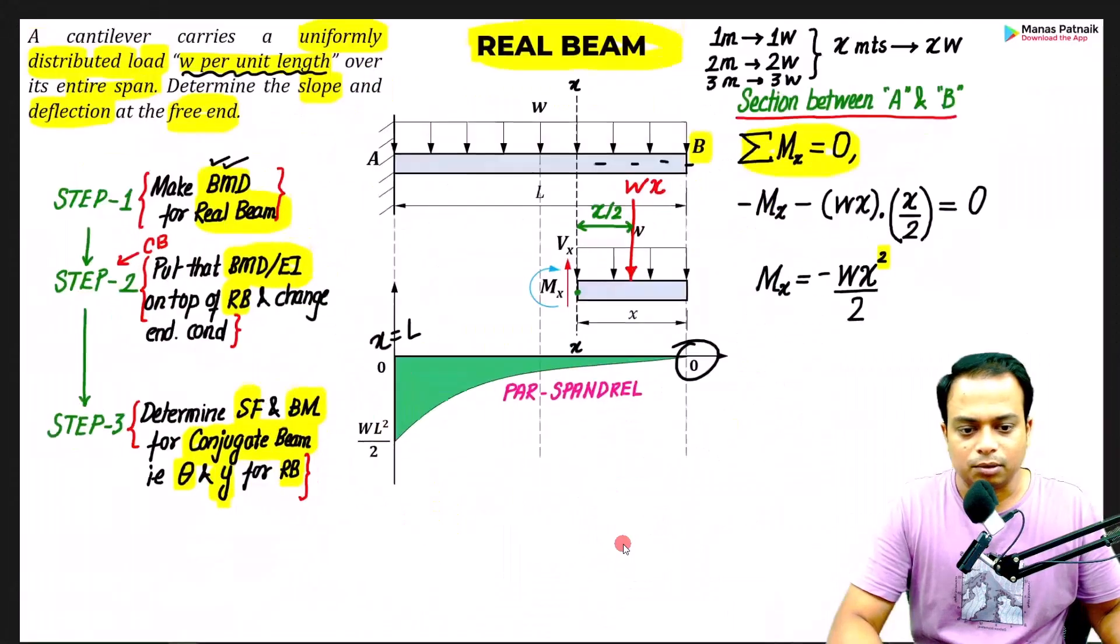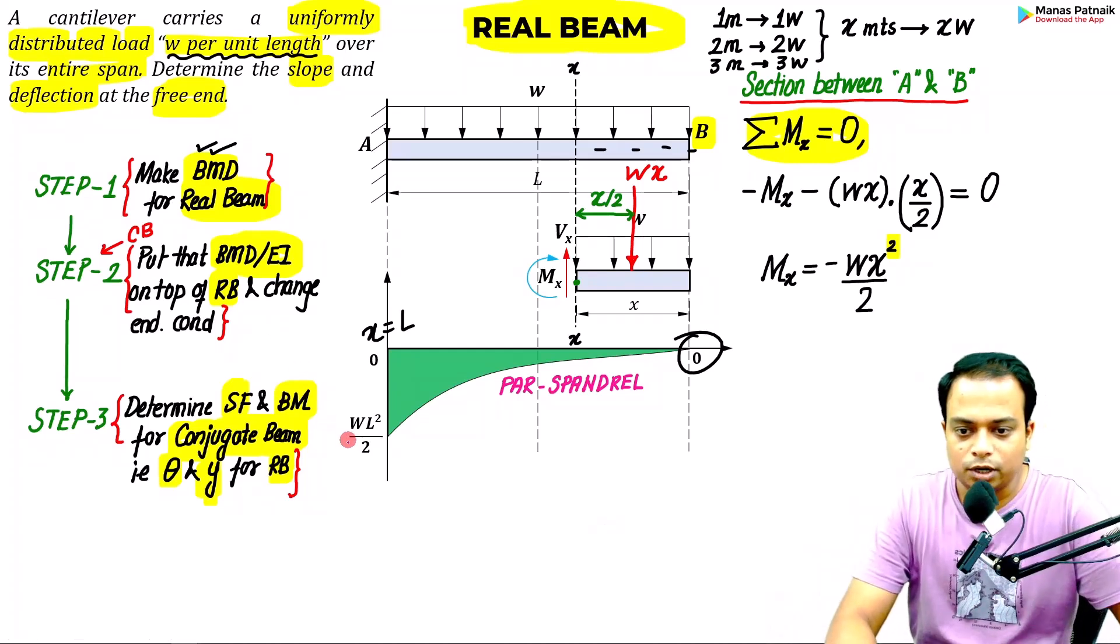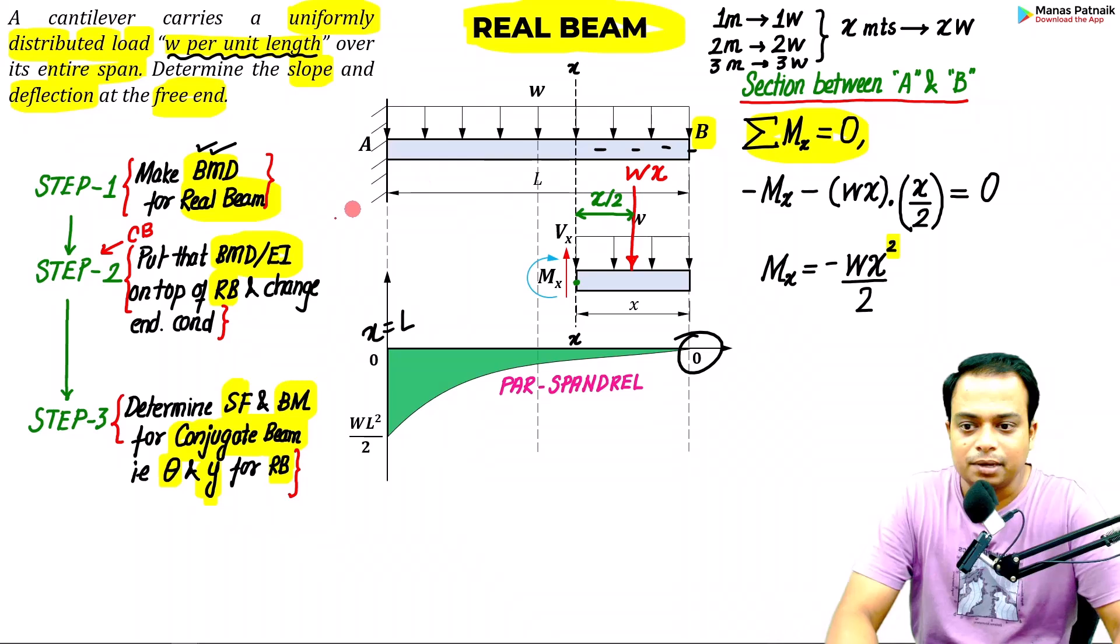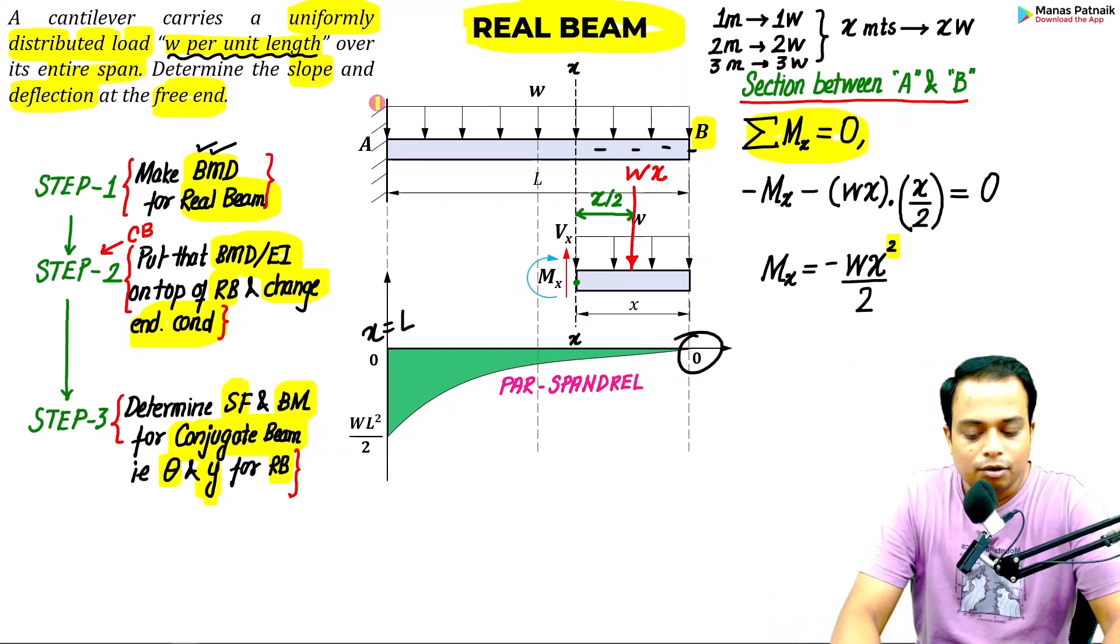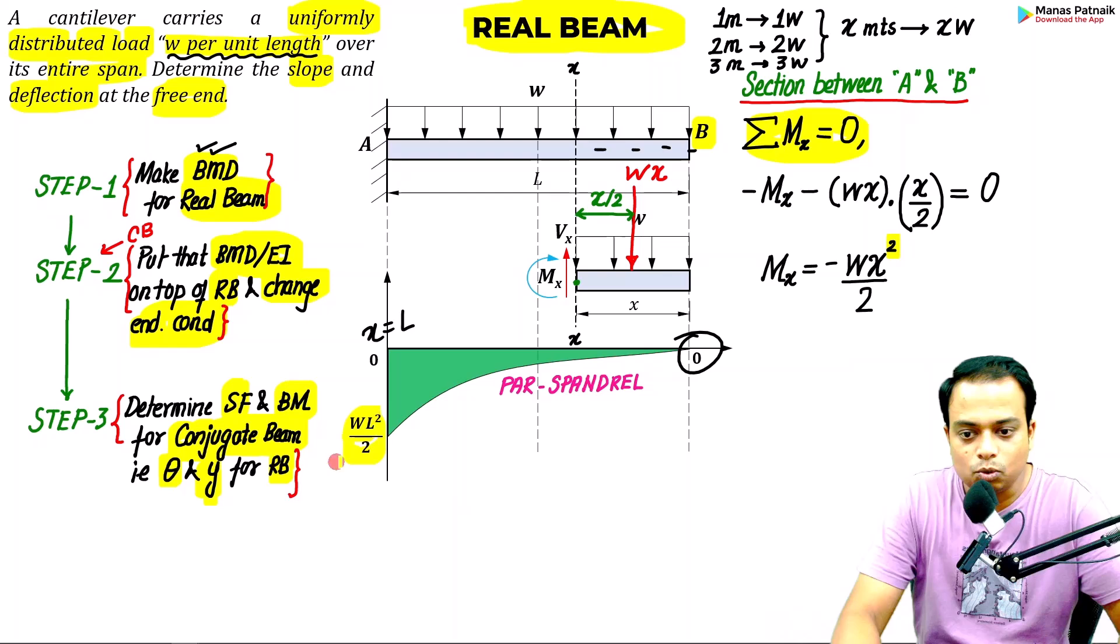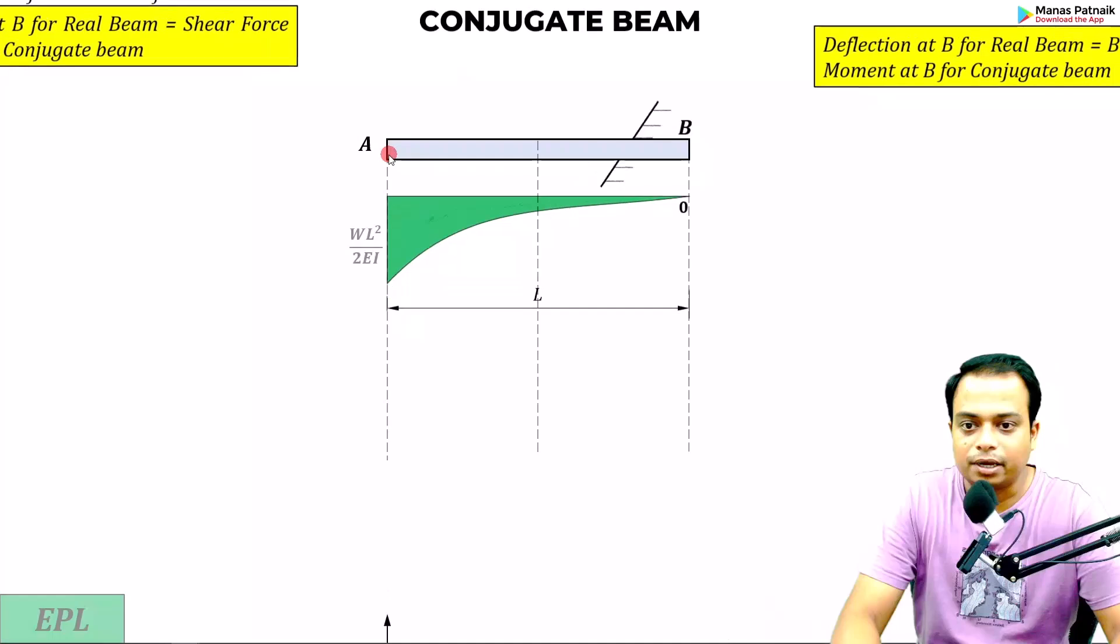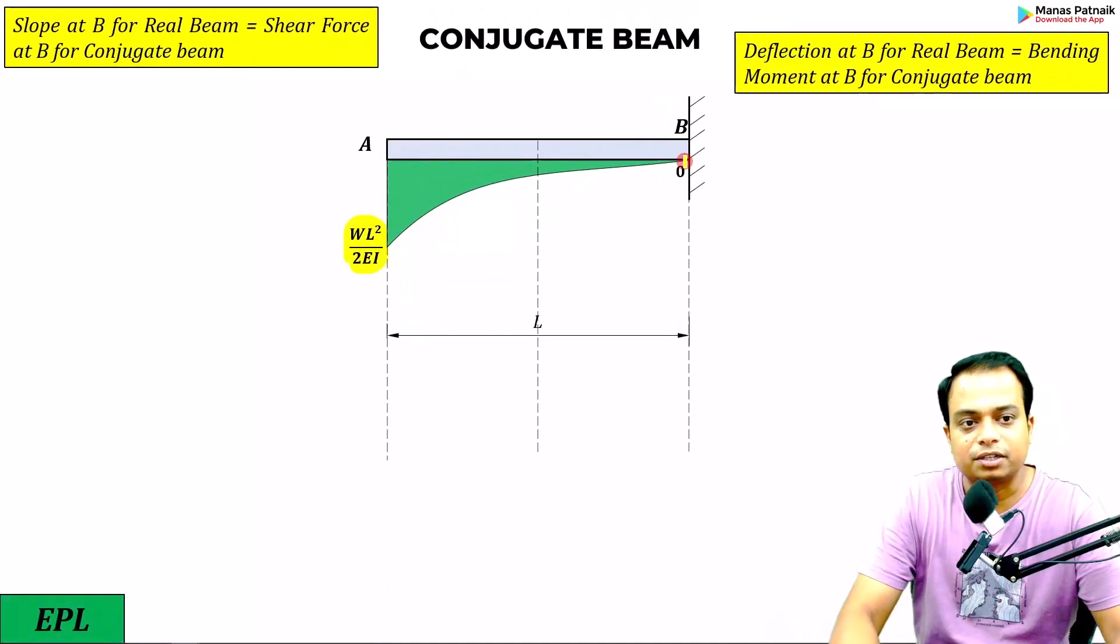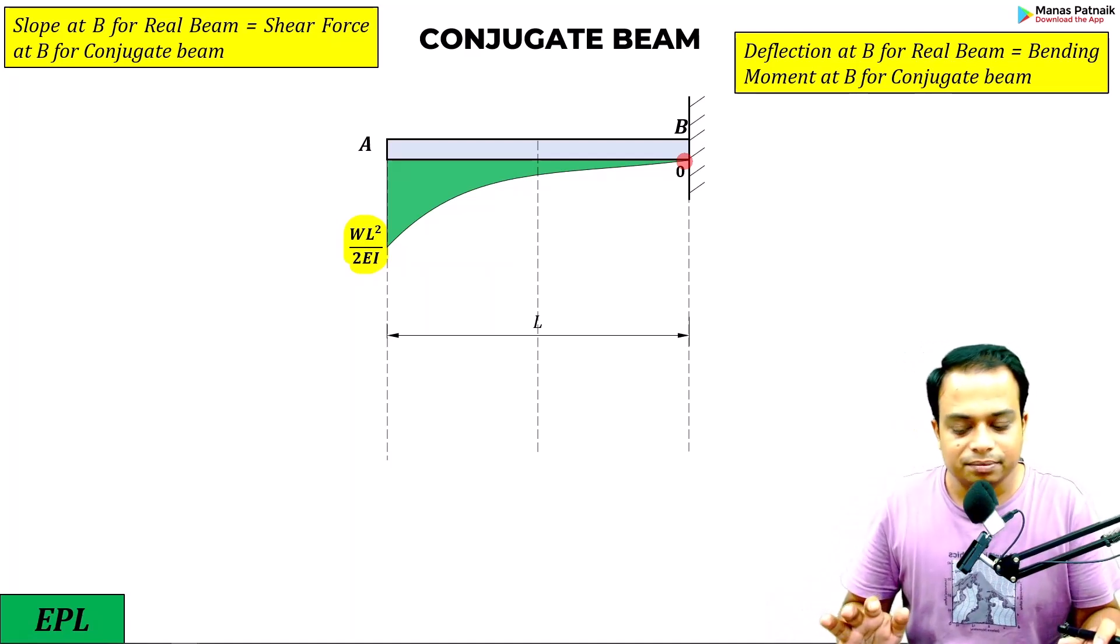Let me get back to the problem. This is where we've reached: wL squared by 2. When divided by EI in step number two, divide by EI, put it on top of the real beam and change the end conditions. This fixed became free, and this free became fixed.